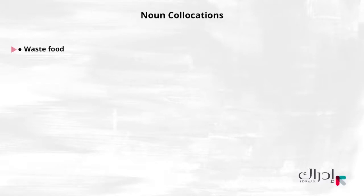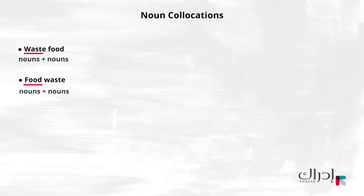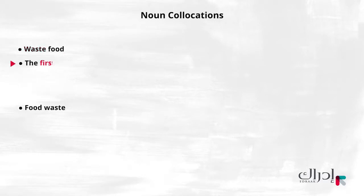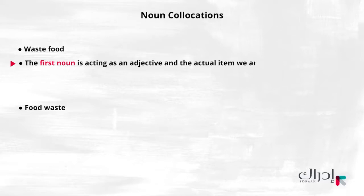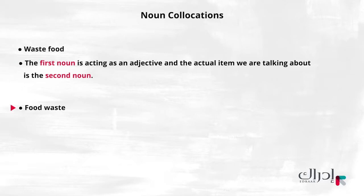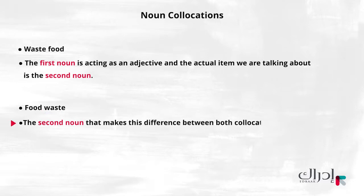Look at the difference between waste food and food waste. Both are nouns followed by noun collocations, but in each case the first noun is acting as an adjective and the actual item we are talking about is the second noun. Accordingly, waste food is talking about food, whereas food waste is talking about waste. It is the second noun that makes this difference between both collocations.